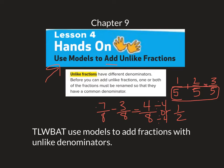Let's read this quick. Unlike fractions have different denominators. Before you can add unlike fractions, one or both of the fractions must be renamed. So that's finding equivalent fractions so they can have a common denominator. Let's take a look.